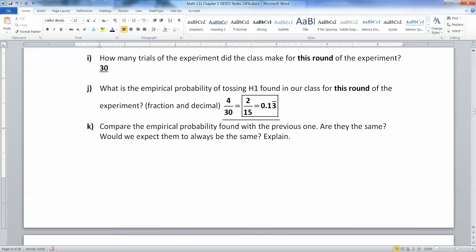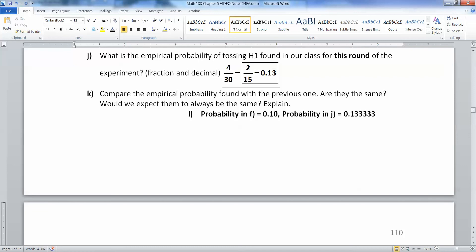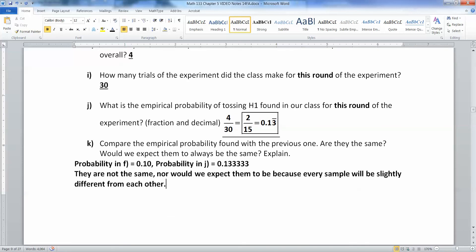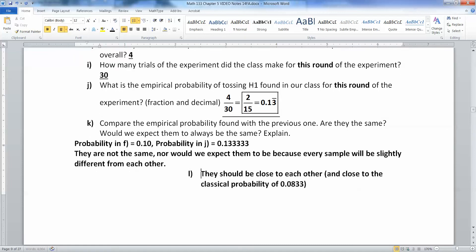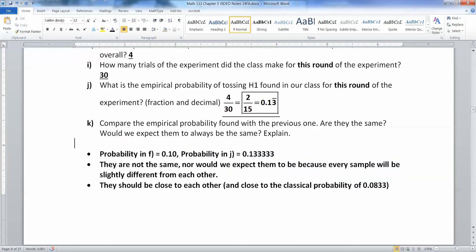So you'll notice that this time our class got different probabilities. So that means that empirical probabilities change. Time after time, you'll get different probabilities coming from them. So they're not going to be the same. Nor would we really expect them to be. So that means that every time you do an experiment, it's going to be slightly different from each other. They're not the same, nor would we expect them to be necessarily. They should be close to each other.